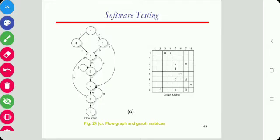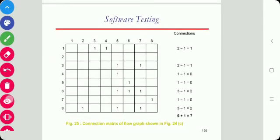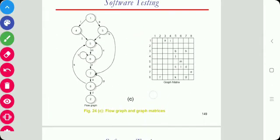The next step is to insert 1 where there is a connection between nodes and insert 0 where there is no connection. Here we have inserted 1 where there is a connection.